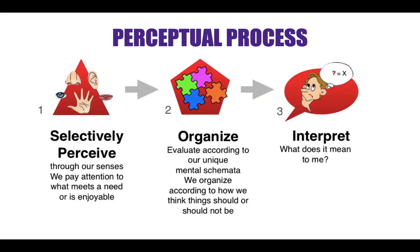Now let's see the perceptual process, which has three stages. The first stage is selectively perceiving through our senses — the five senses. We pay attention to what meets a need or is enjoyable. The second stage is organizing: we evaluate according to our unique mental schemata and organize according to how we think things should or should not be.